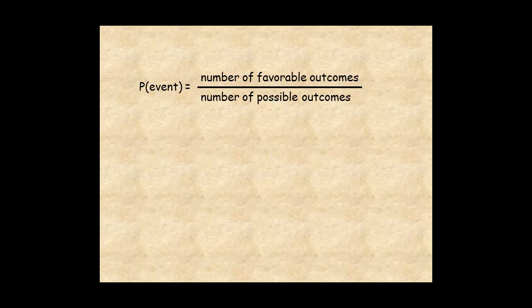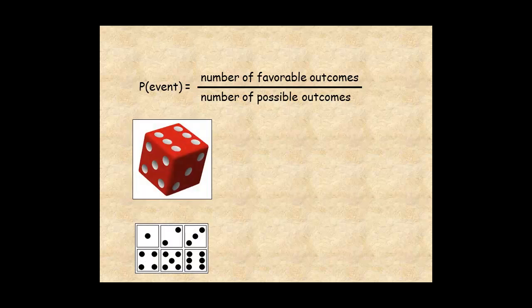For example, if you roll a dice, the probability of a 5 is 1 over 6, where 1 is the number of favorable outcomes, rolling a 5, and 6 is the number of possible outcomes. There are 6 faces on a dice numbered 1 through 6.